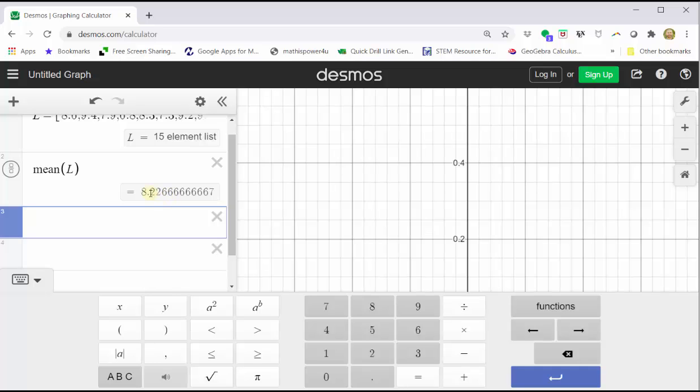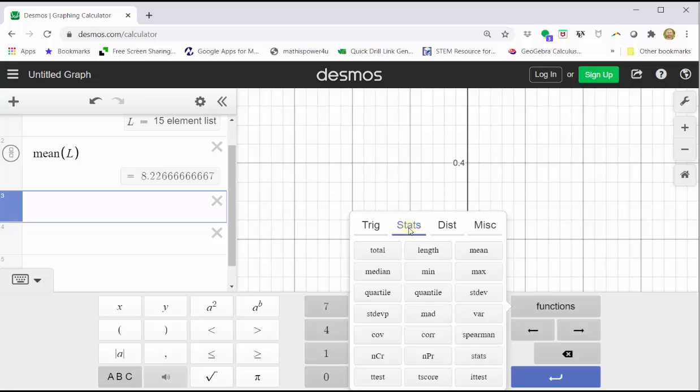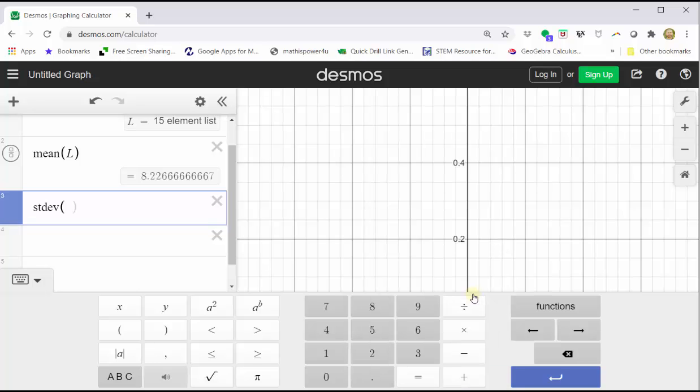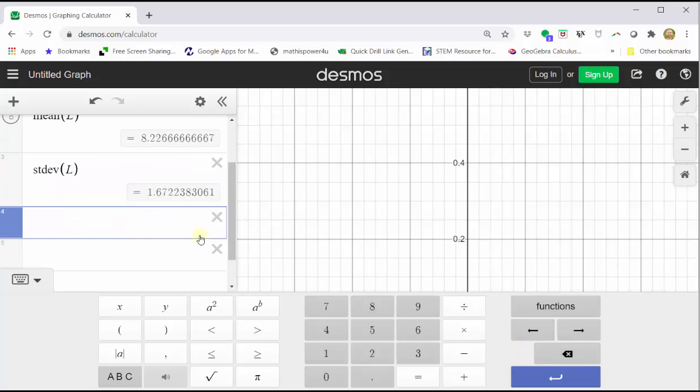And now let's find the sample standard deviation, click functions, click stdev for sample standard deviation. Stdevp stands for the population standard deviation. We want the sample standard deviation, stdev. Enter the variable capital L, and we get the same sample standard deviation.